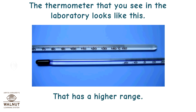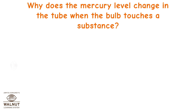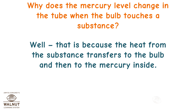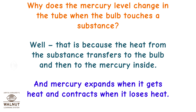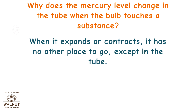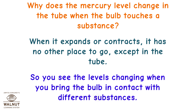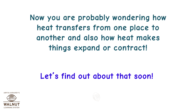The thermometer that you see in the laboratory has a higher range. Why does the mercury level change in the tube when the bulb touches a substance? That is because the heat from the substance transfers to the bulb and then to the mercury inside. Mercury expands when it gets heat and contracts when it loses heat. When it expands or contracts, it has no other place to go except in the tube. So you see the levels changing when you bring the bulb in contact with different substances.